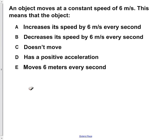An object moves at a constant speed of 6 meters per second. This means that the object: A increases its speed by 6 meters every second; B decreases its speed by 6 meters every second; C doesn't move; D has a positive acceleration; E moves 6 meters every second.